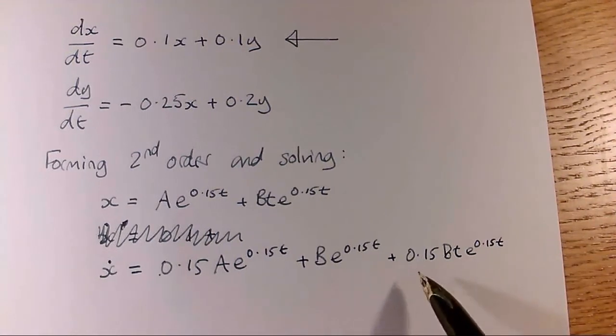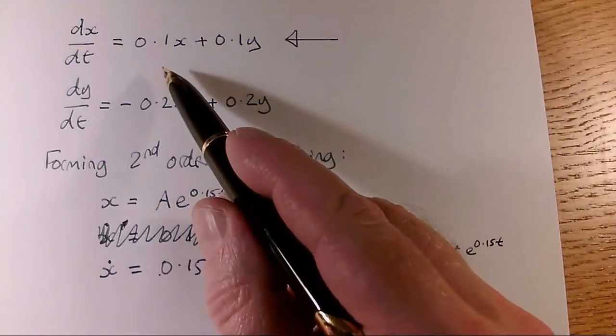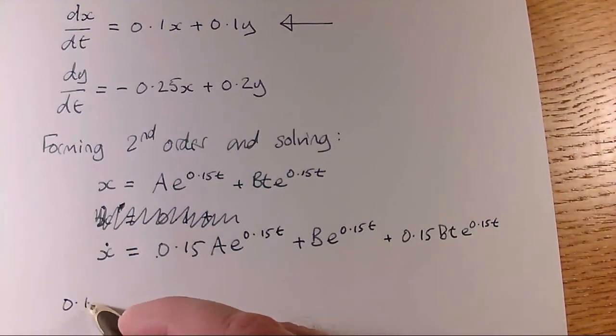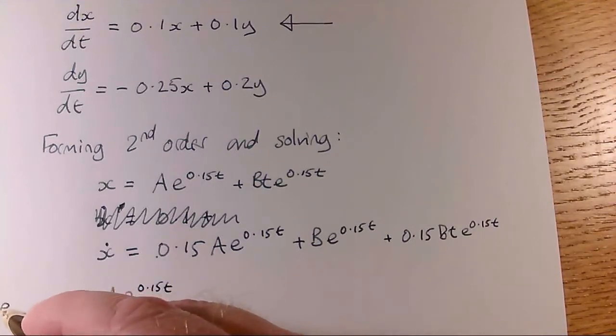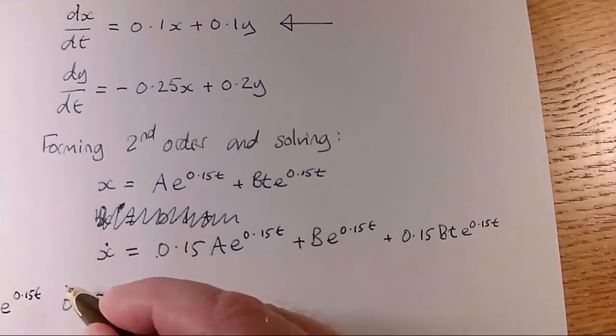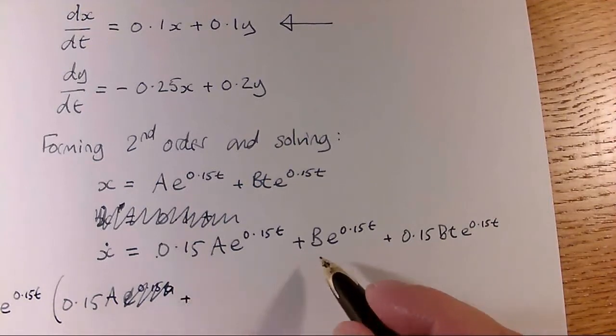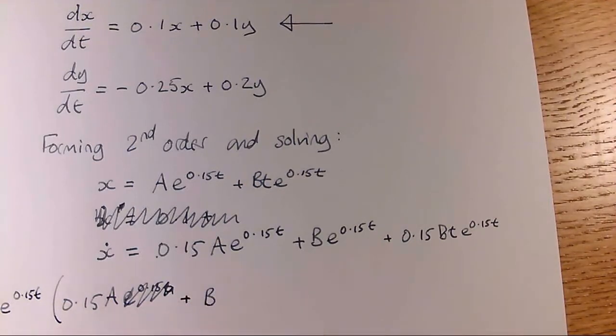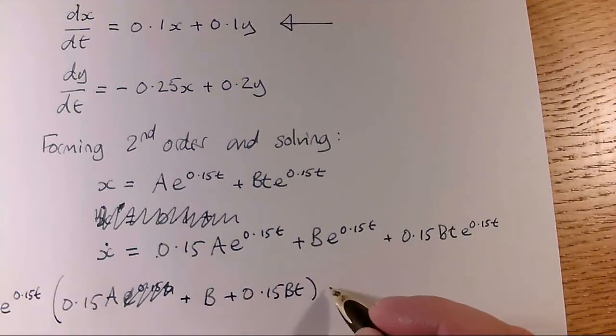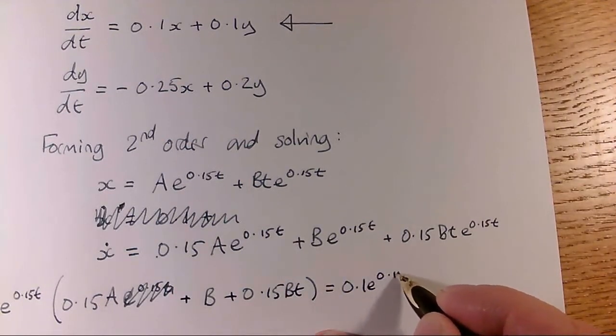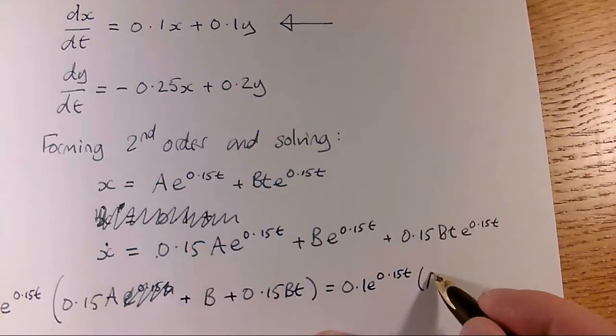Okay, and if I lob that into the top equation, and a 0.1x and a 0.1y, we can see what we get. So 0.15a e to the 0.15t. Actually, e to the 0.15t is a dirty great big common factor, let's take it out. So, plus this term here, it's just b times that thing out there, plus 0.15bt equals 0.1e to the 0.15t times brackets a plus bt.